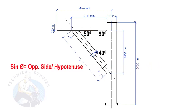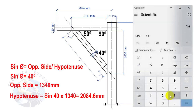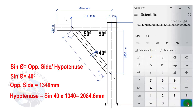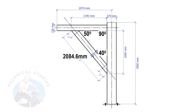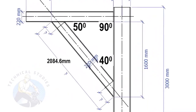Let us apply the sine formula: sine of an angle equals the opposite side divided by the hypotenuse. Sine of 40 degrees, with opposite side equal to 1340 millimeters. So the length of the bracing is 2084.6 millimeters. The width of the beam is 220 millimeters.